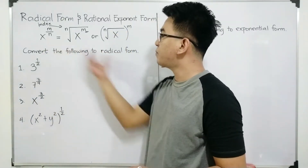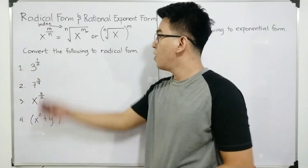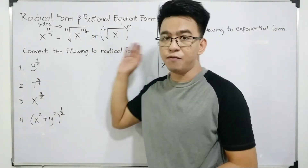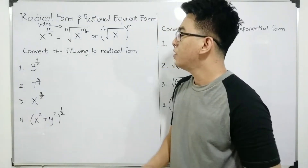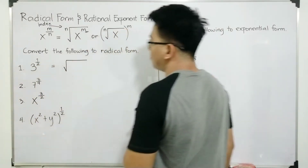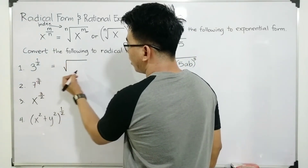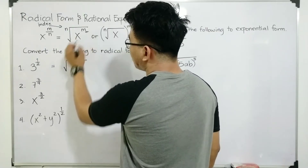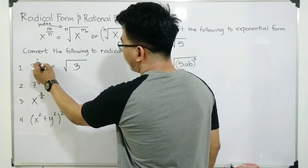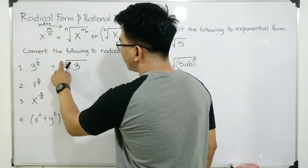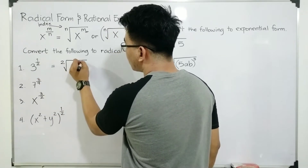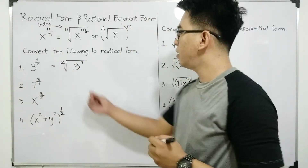So for you to understand well how to use this kind of expression, let's have these examples. Convert the following to radical form. Items number 1, 2, 3, and 4 are all in rational exponent form. Our target here is to convert this into radical form. So let's start with this one. First, you need to draw a radical symbol. Second, your base will serve as your radical — the expression inside the radical. And your denominator will go here as the index of your radical. So this is 2. And the numerator of your rational exponent, which is 1, will serve as the exponent of your radical.